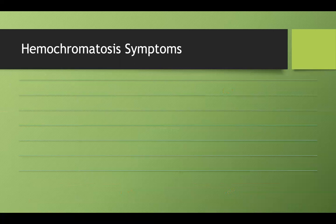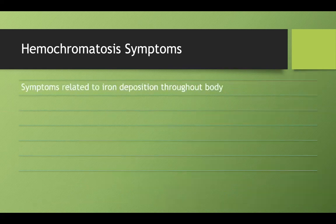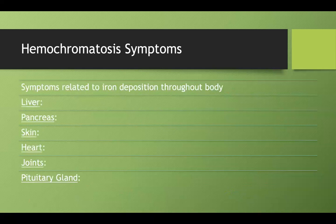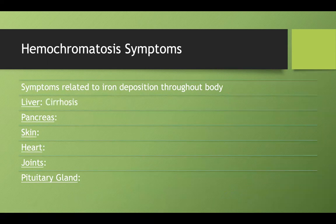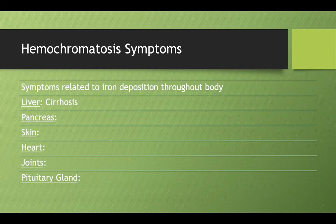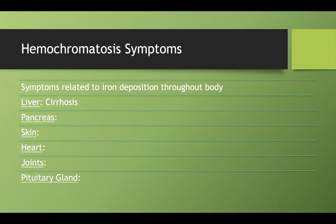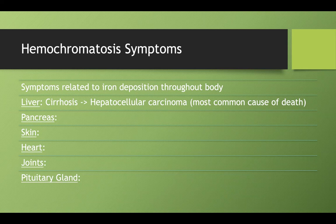The symptoms of hemochromatosis are all related to iron overload in different parts of the body. In the liver, if you have too much iron, you'll have liver cirrhosis over time. All that iron can undergo a Fenton reaction and cause free radical damage. If you have too much free radical damage in your liver, it'll ultimately cause inflammation and cirrhosis. As we've discussed many times, anytime you have liver cirrhosis, that can increase your risk of developing hepatocellular carcinoma. In the case of hemochromatosis, HCC is the most common cause of death.